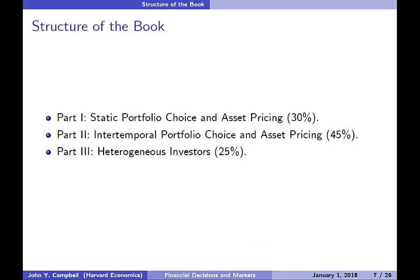Moving on to the structure of the book, it has three broad parts. Part one is on static portfolio choice and asset pricing, which is about 30% of the content. Part two moves from static models to dynamic models and talks about intertemporal portfolio choice and asset pricing — that's 45% of the book. And then part three on heterogeneous investors is 25% of the book.